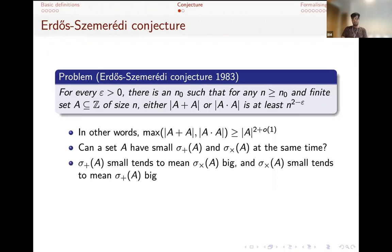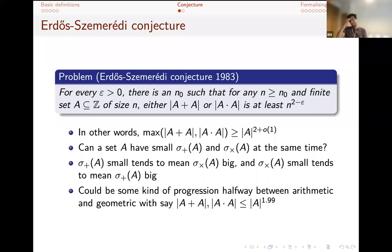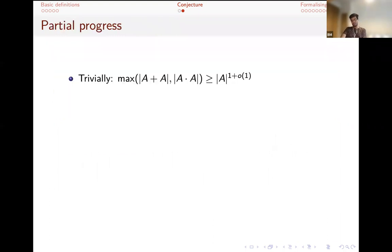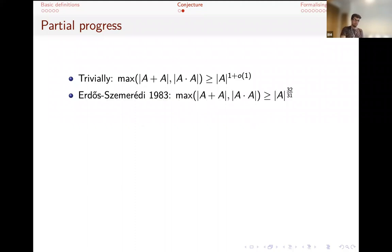This makes sense because we've seen that having small additive doubling tends to mean the multiplicative doubling is big, and vice versa. But this is still a conjecture - it could be that something between an arithmetic progression and a geometric progression has both sum set and product set bounded by A to the 1.99. There has been some partial progress. There's the trivial result that the maximum is at least one plus little-o of one. The boundary is two plus little-o of one at the top, and the trivial bound is one.